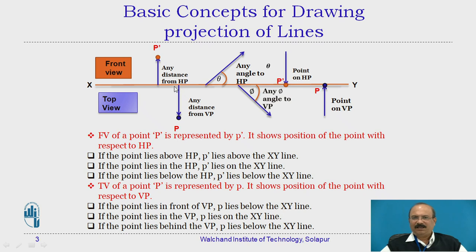Similarly, if any point is given as 30 mm or 40 mm from the vertical reference plane, that distance is measured below the XY line in the downward direction. Any distance from the vertical plane is measured from the XY line, below the XY line.